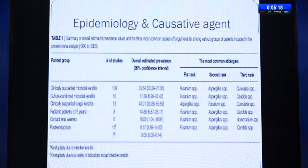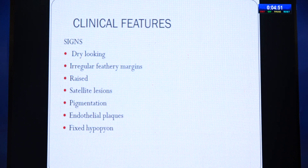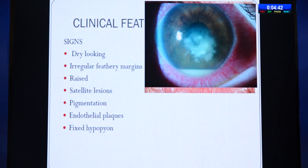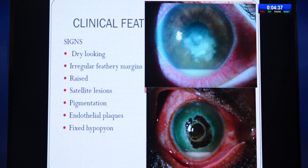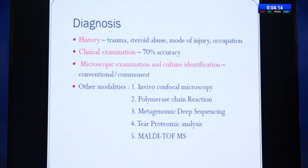Over 30 years, estimated prevalence of fungal keratitis is around 23% in clinically suspected cases, around 43% in cases with high clinical suspicion of fungal etiology, and around 15% in pediatric patients. The classic signs: dry-looking, elevated ulcer with irregular margins, satellite lesions, pigmented lesions with dematiaceous fungi, endothelial plaques, and fixed hypopyon — all more suggestive of fungal keratitis. History and clinical examination work with about 70% accuracy. Corneal scraping and cultural identification remain the most common method.